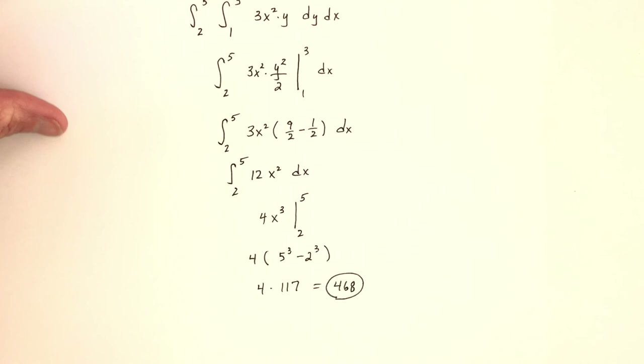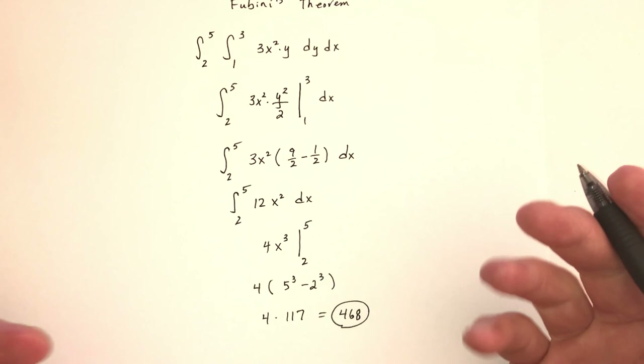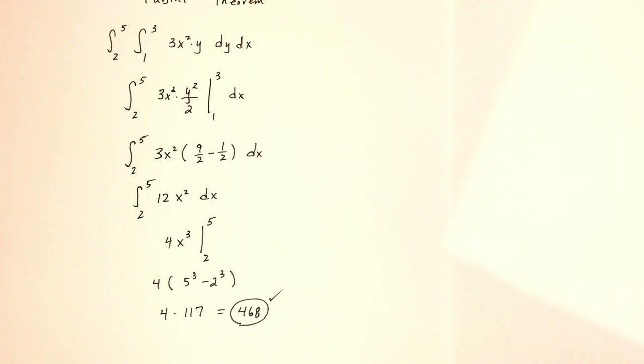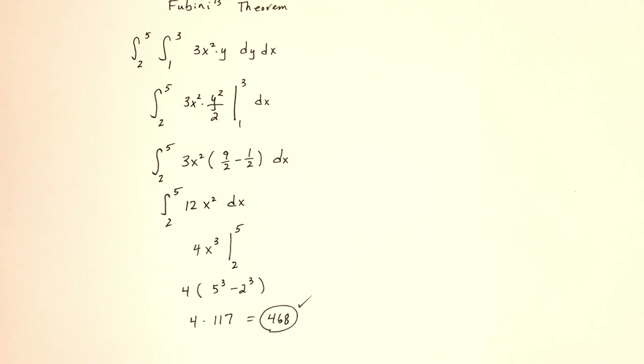In this example it really didn't make a difference - each order was equally easy. Switching the order gave me the same answer, and both required pretty much the same amount of work. But there are going to be times when you switch the order and one way is easier than the other, so it's good to have that ability.